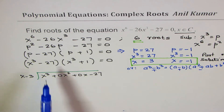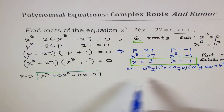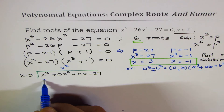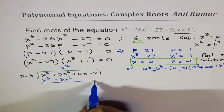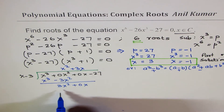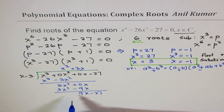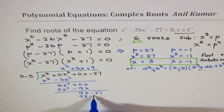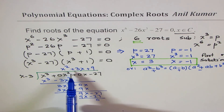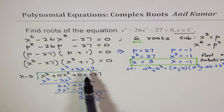We multiply x squared by x minus 3 to get x cubed minus 3x squared, leaving 3x squared plus 0x. Then 3x times x minus 3 gives 3x squared minus 9x, leaving 9x minus 27. Finally, 9 times x minus 3 gives 9x minus 27, remainder 0. So the second factor is x squared plus 3x plus 9, which is a squared plus ab plus b squared — the expected result.